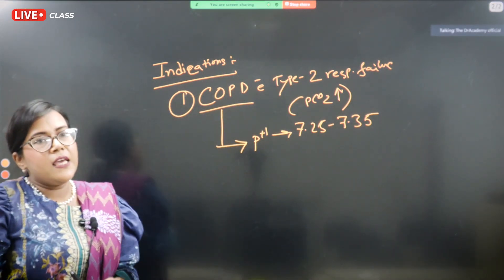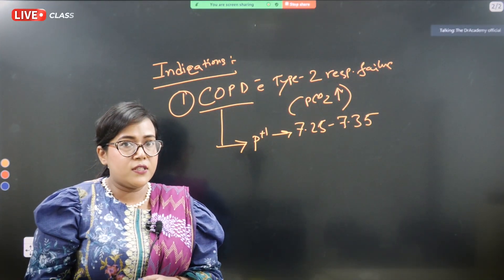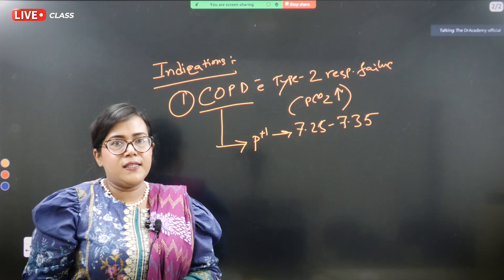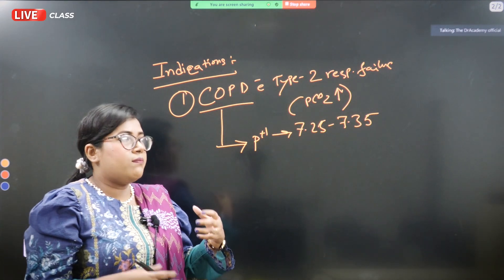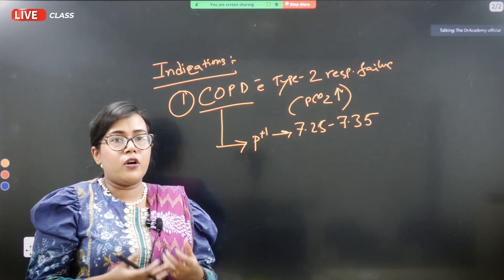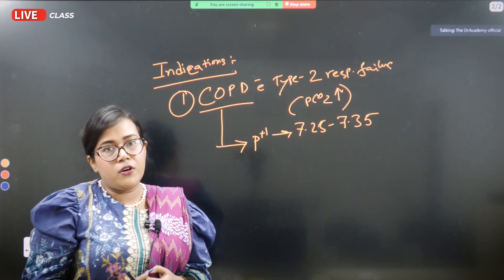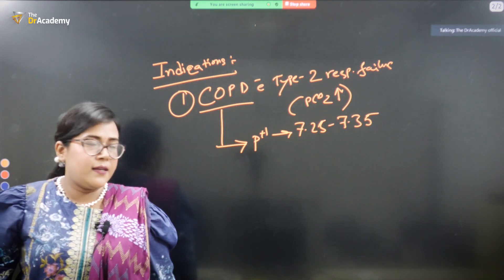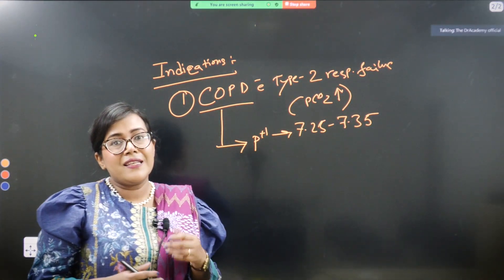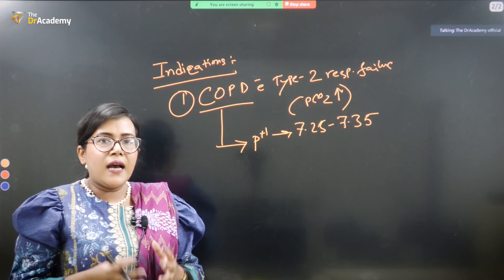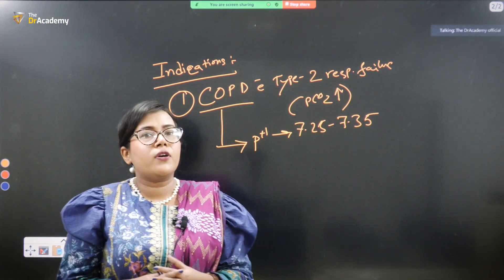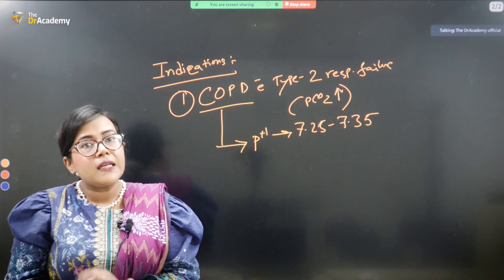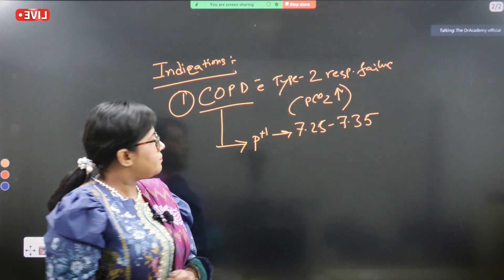So what happens if a type 2 respiratory failure patient in COPD goes on to having more acidotic state? That means when the patient is becoming drowsier, is losing his or her consciousness level, partial pressure of carbon dioxide on the ABG report shows four-fold increase from the initial baseline, and the pH keeps on falling less than 7.25. In that case, there is a very good indication of considering sending the patient to the ICU and considering mechanical ventilation via intubation.